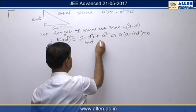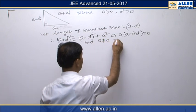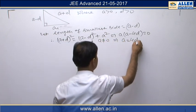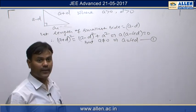But a cannot be 0, being the side length of the triangle. So from here we get one relation between a and d, that is a = 4d.